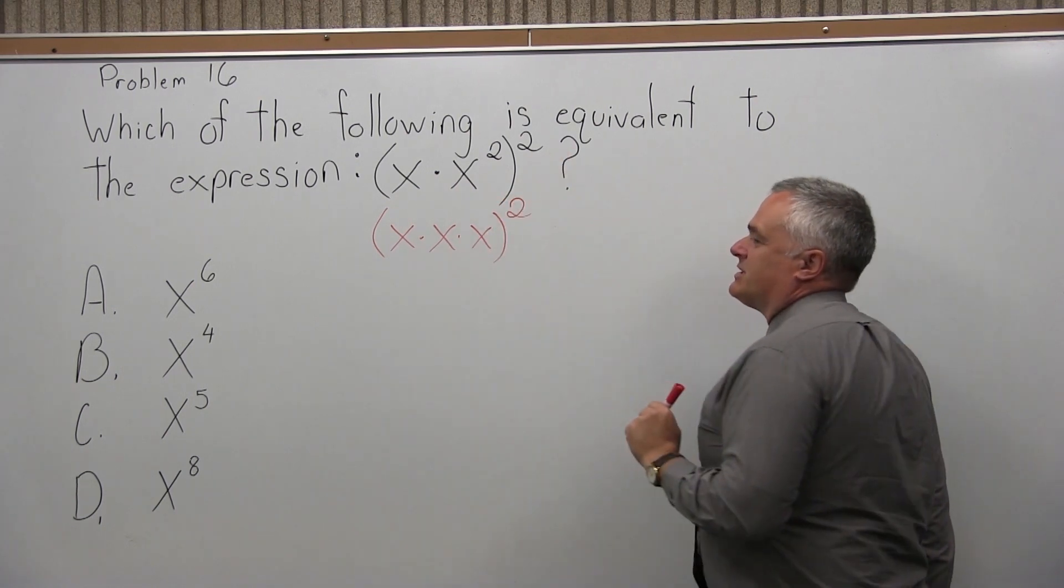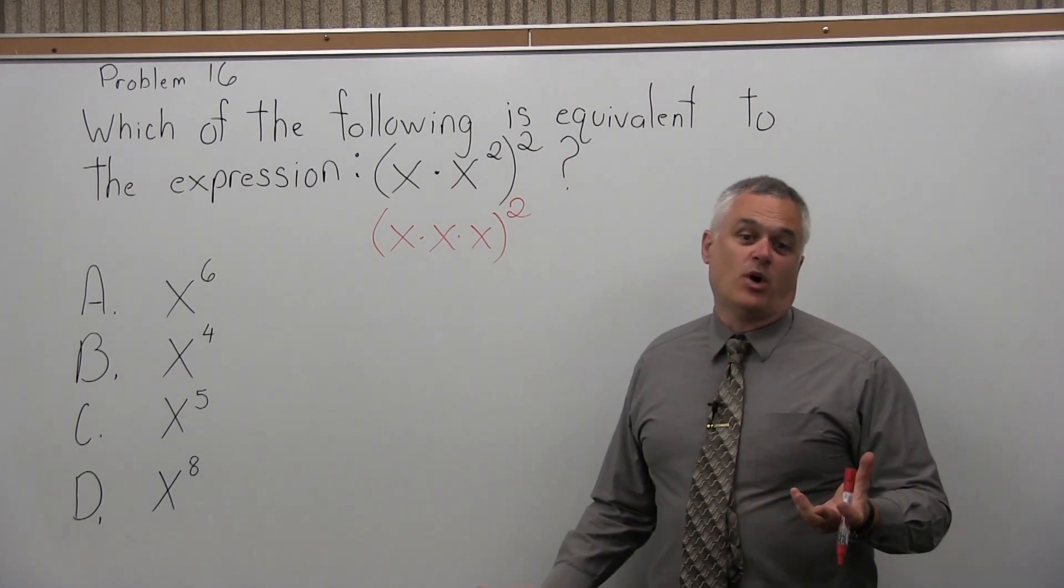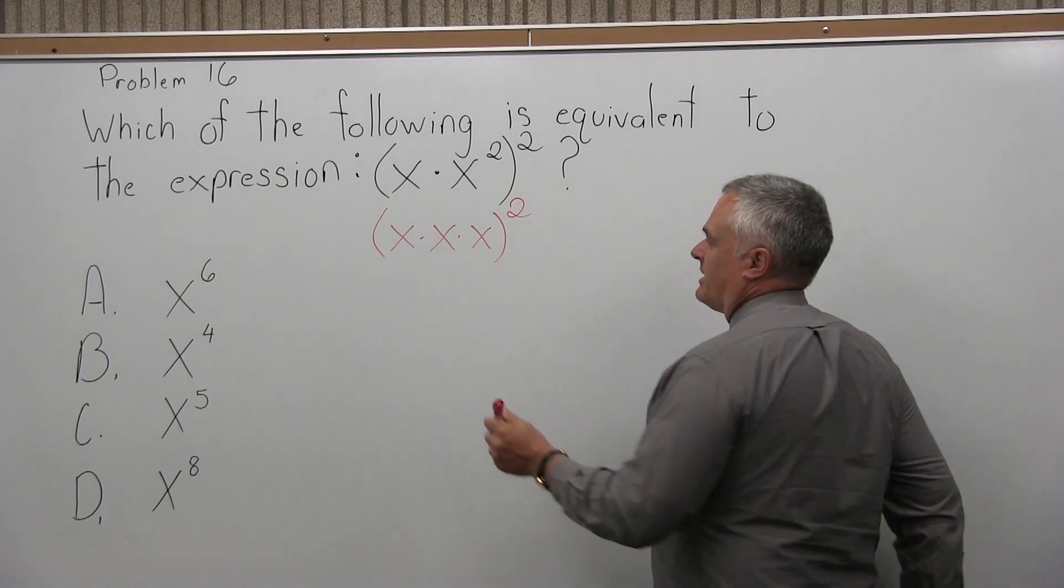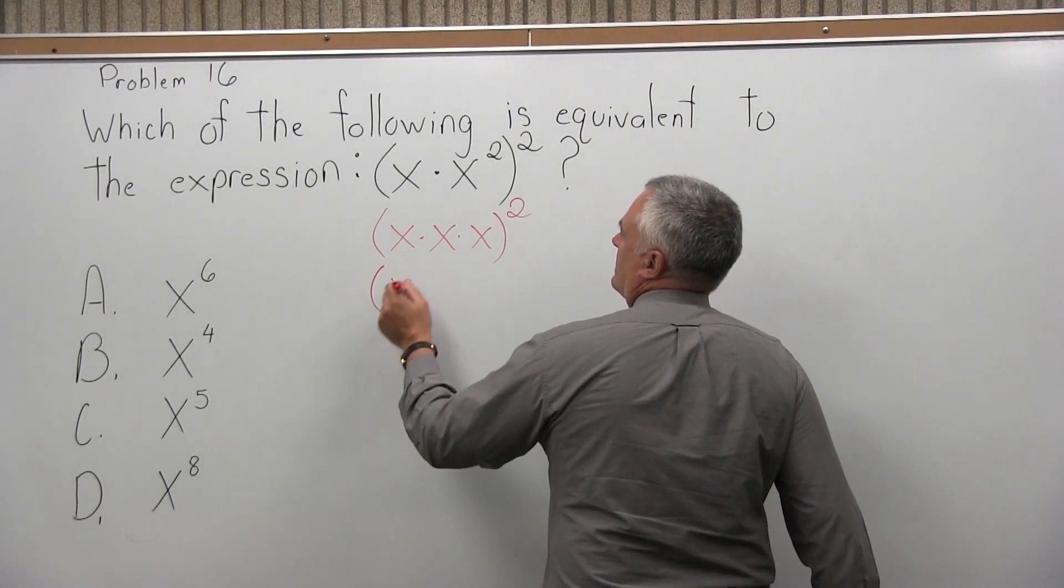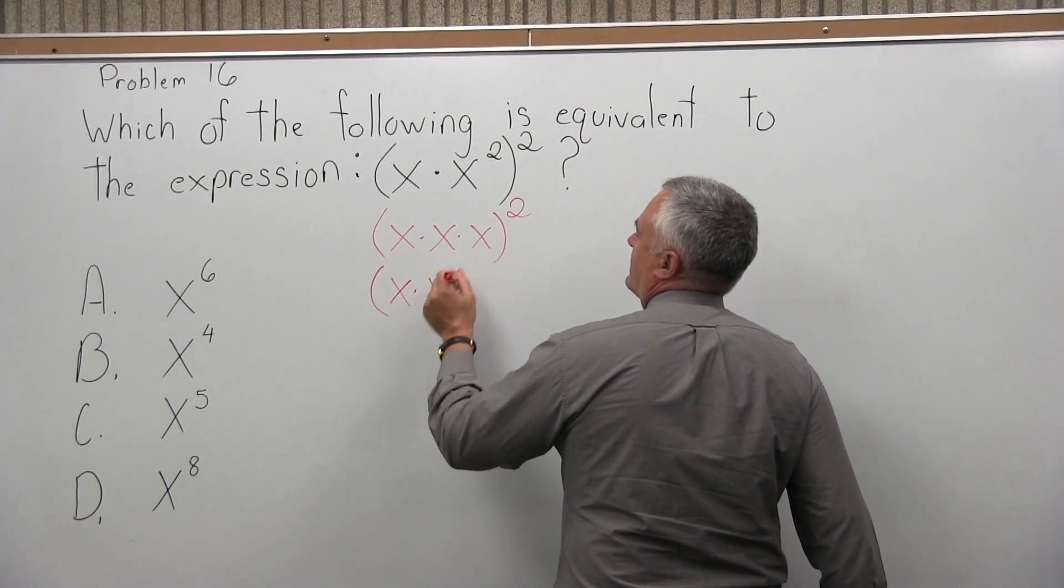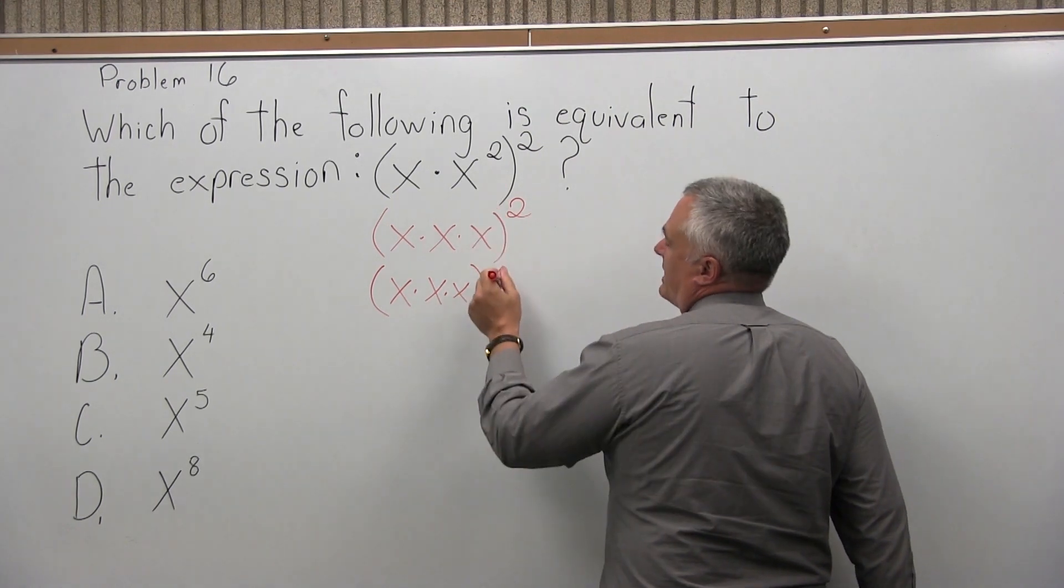and that is raised to the second power. So it means that quantity times itself, two of them times each other. So it is xxx squared means times another xxx.